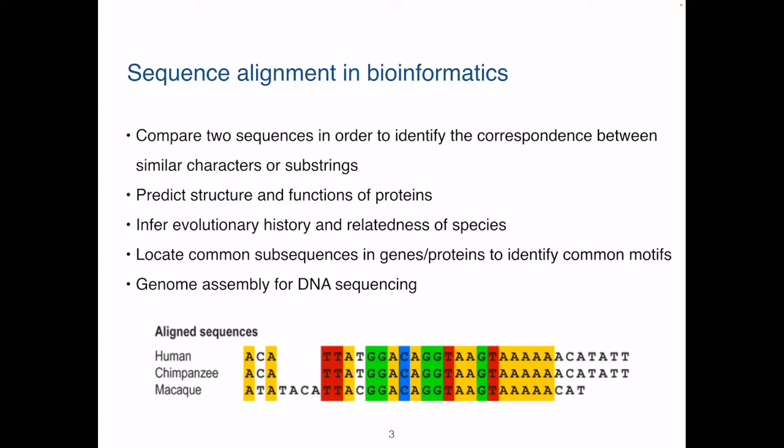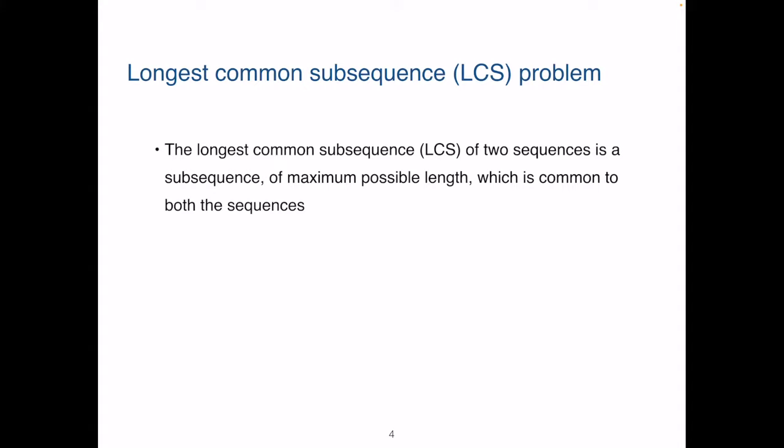There is a non-trivial problem in bioinformatics where researchers compare two DNA sequences to identify the correspondence between similar characters or substrings. This is called subsequence alignment analysis. Such an analysis can be used to predict structure and functions of proteins. By comparing DNA sequences from different species, sequence alignment allows us to infer evolutionary trajectory and see if species are related and how much they are related. So the problem is, can we locate common subsequences in different DNA sequences? This is the longest common subsequence or LCS problem.